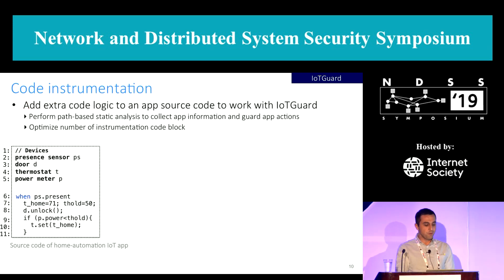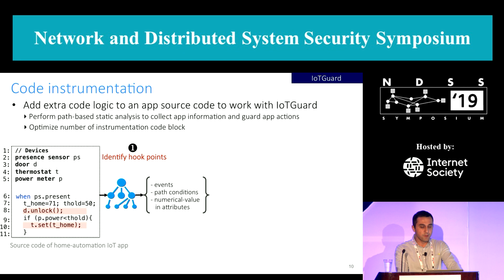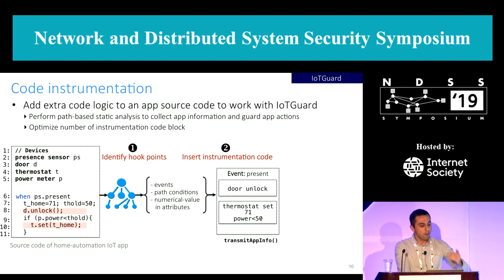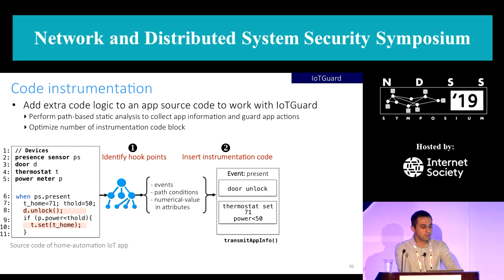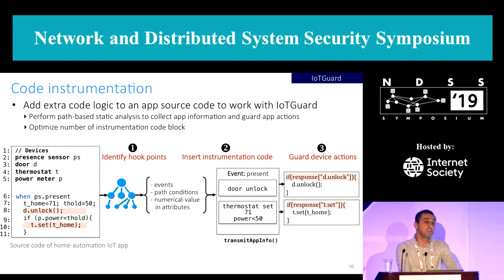The first challenge in IoT Guard is instrumenting the code to collect app information. From the interprocedural control flow graph of an application, we develop an instrumenter that works in three steps. First, it identifies device actions in an app. For each action, it performs path-based static analysis to collect the event that triggers the action, the path condition, and the numerical-valued attributes in the action code. Then it inserts instrumentation code before an action is executed and transmits this information to the data collector. We apply optimizations to reduce lines of code added — for instance, when actions share the same event and path condition, a single code block is added. Lastly, the instrumenter inserts a guard for each action, which allows execution based on the response returned from IoT Guard.